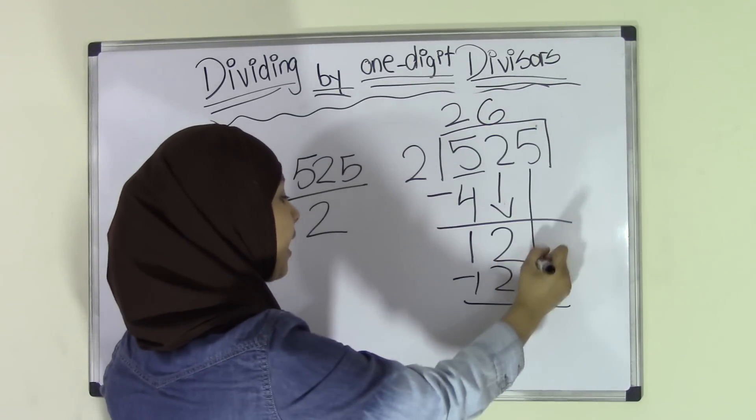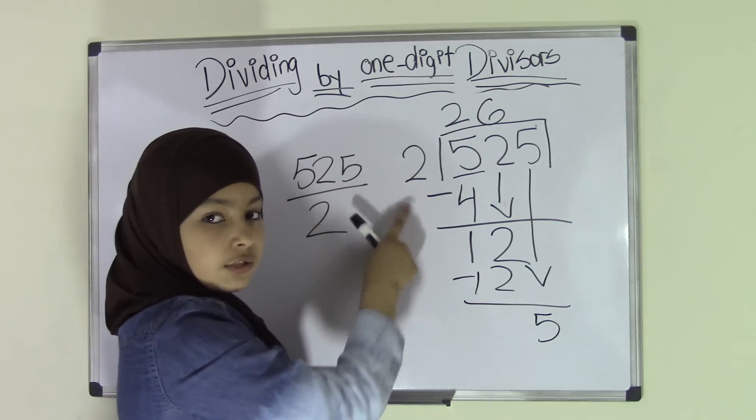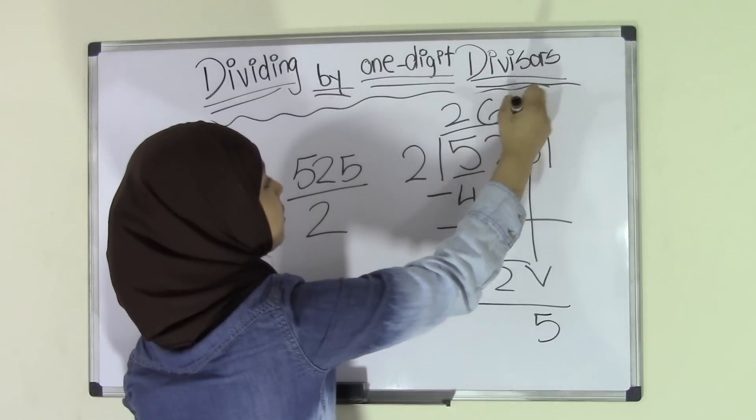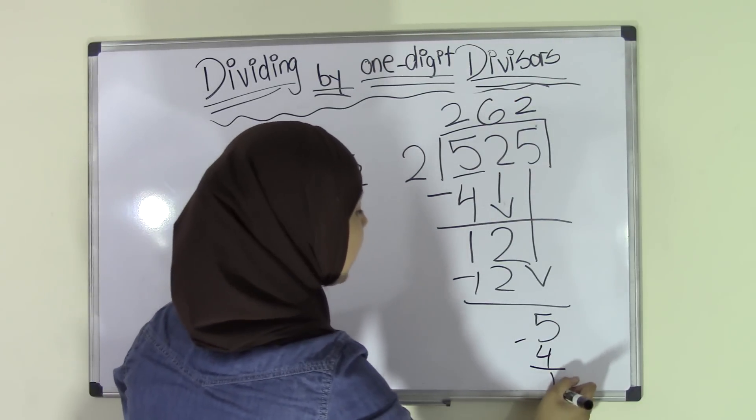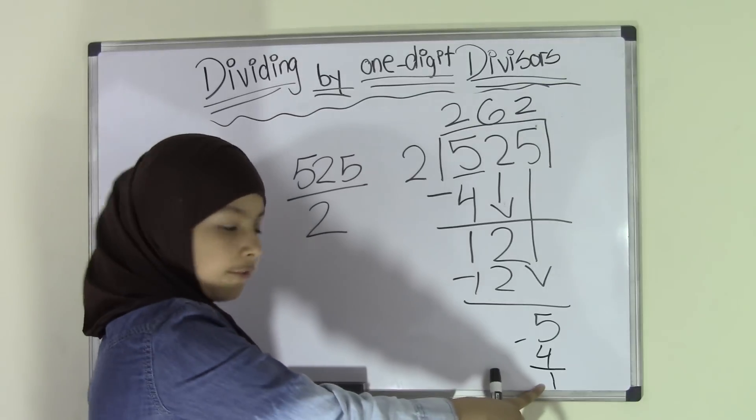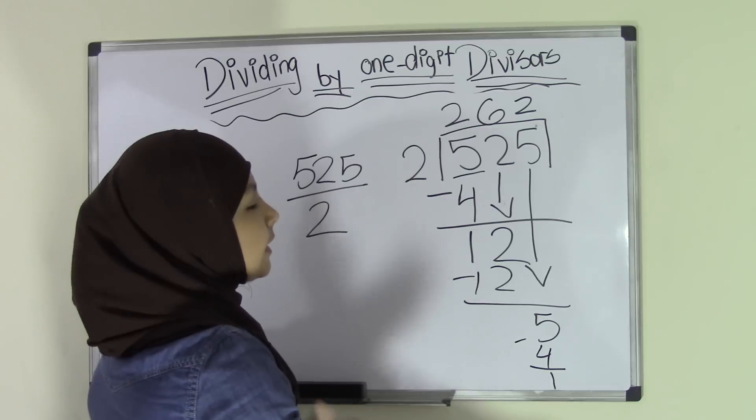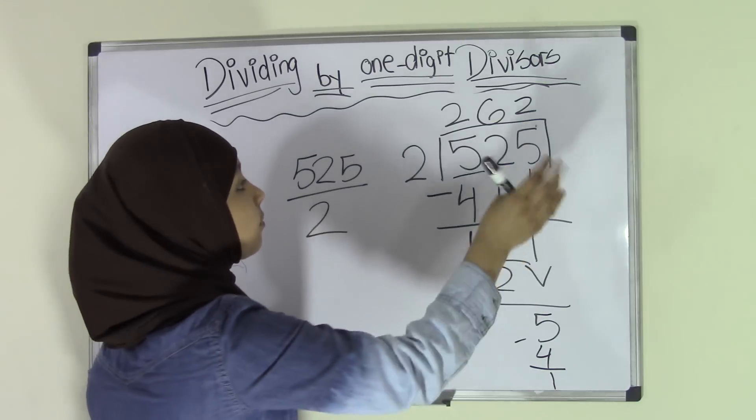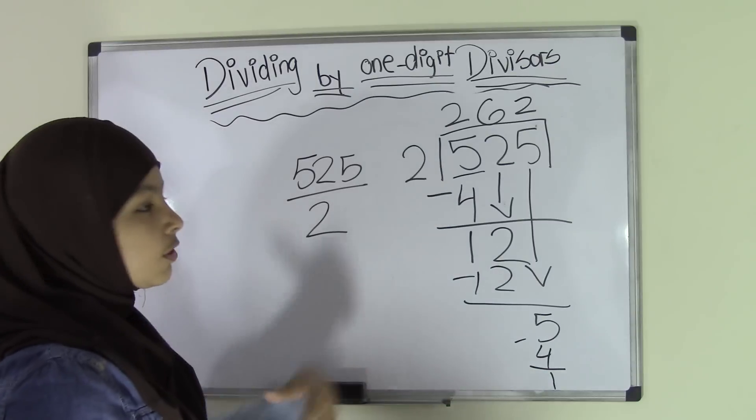Then we're going to bring down the 5 here. And now how many times does 2 go into 5? 2 times because 2 times 2 is 4. I'm sort of running out of space here. Now we have a remainder of 1. We could write this as an improper fraction. So that would be 262 and a half because 1 over 2 is a half.